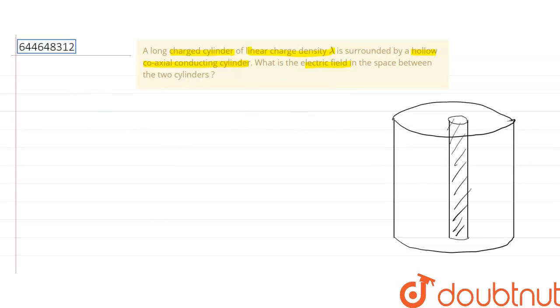As shown in the figure, there is a long charged cylinder that is inside the hollow coaxial conducting cylinder. Our inner cylinder is positively charged with a linear charge density lambda.